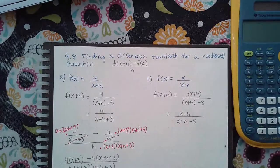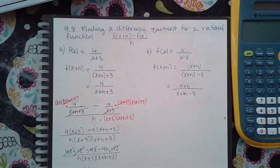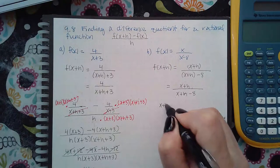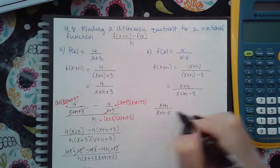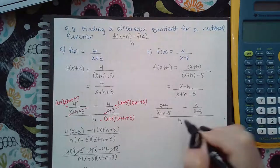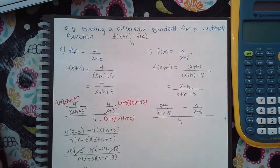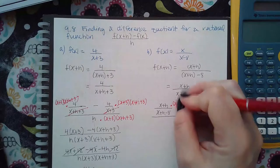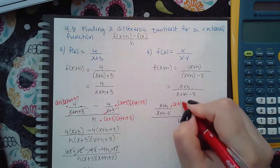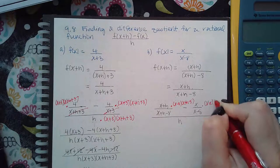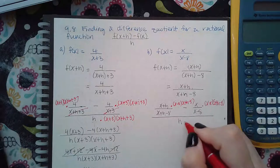You cannot simplify that expression any further, so we jump straight into the difference quotient. The difference quotient gives me this fraction minus the original fraction, all over h. Just like before, we multiply each by the common denominator — x plus h minus eight, x minus eight, and x plus h minus eight — and the same at the bottom.